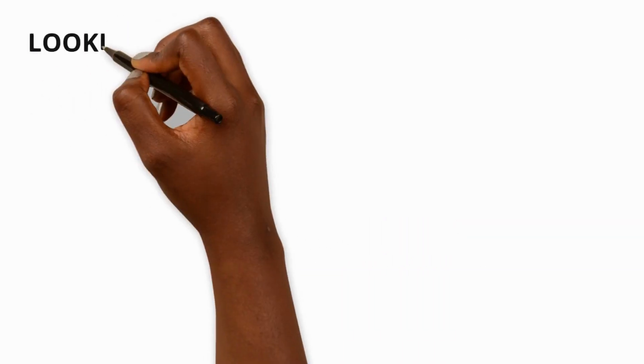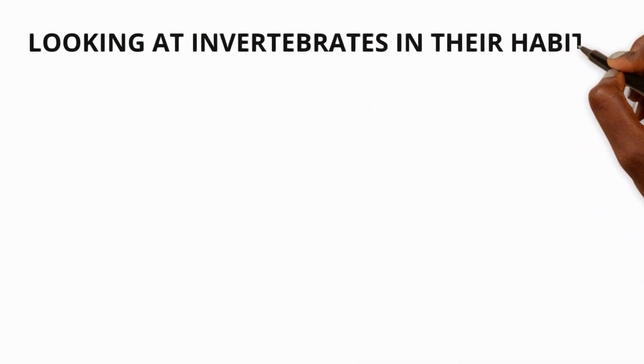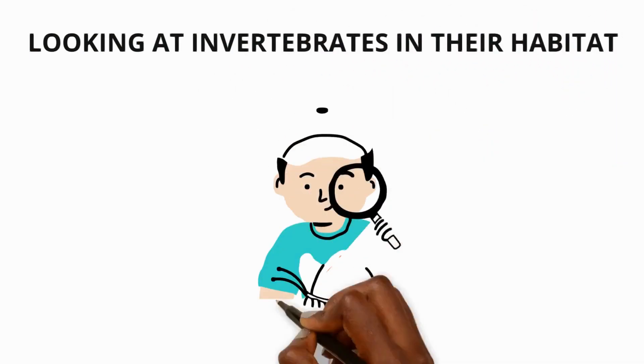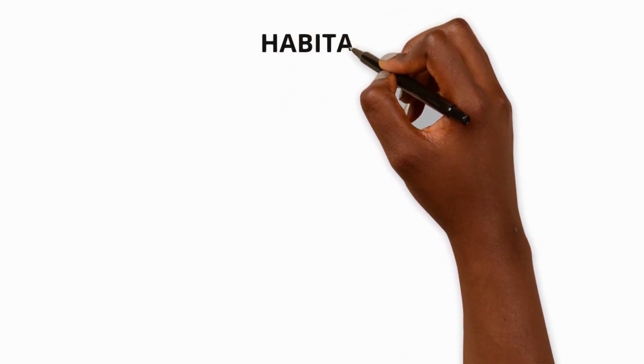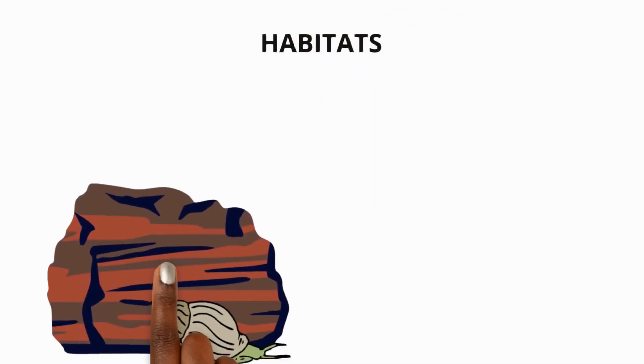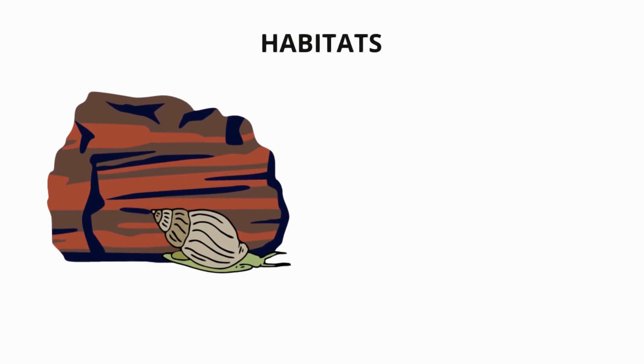Observing invertebrates. We can look at invertebrates in their natural habitat. Habitats are the place where animals and plants live. They like dark damp areas like under large stones and damp logs.